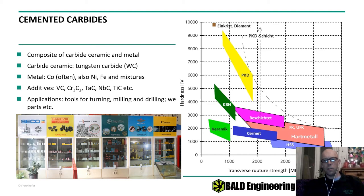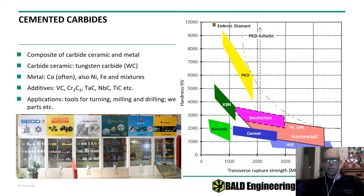That includes polycrystalline diamond and different types of hard metal based on either tungsten carbide or cubic boron nitride. As you notice, this whole graph is in German, but it's sort of a universal language in this business.